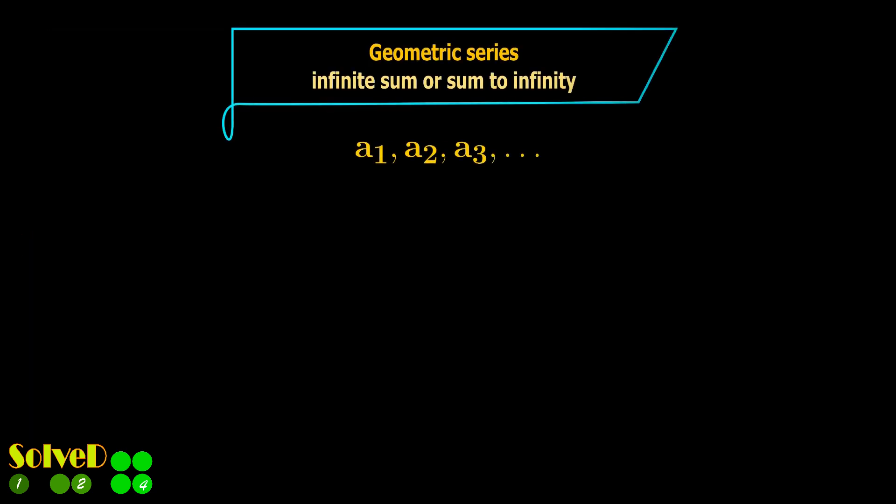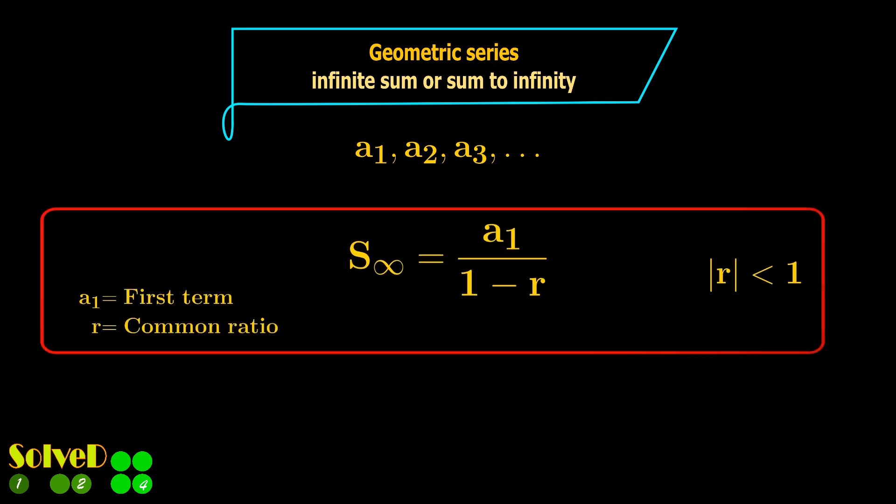For a geometric series, use this equation for the sum to infinity. For the common ratio, divide the second term by the first term, or the third term by the second term.